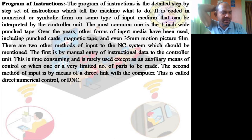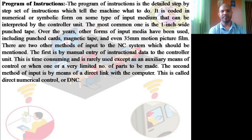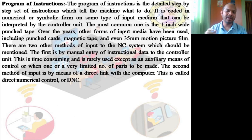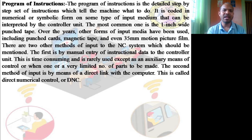The program of instructions is a detailed step-by-step set of instructions telling the machine what to do — from switching on the spindle, setting speed, feed, depth of cut, coolant on/off, material movement in X, Y, and Z directions, removing material, cleaning, returning to position, and switching off the spindle. Everything is coded in numerical or symbolic form that can be interpreted by the controller unit.